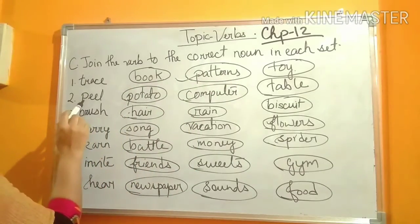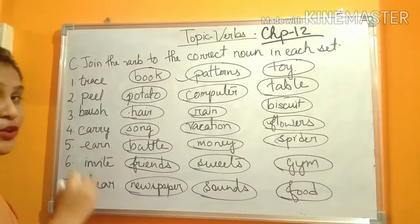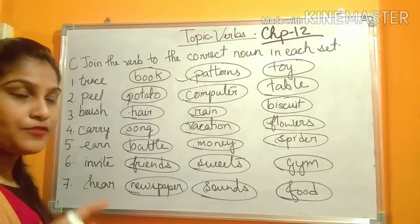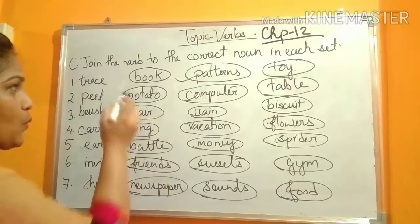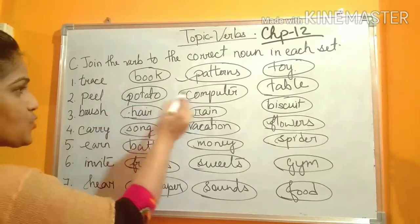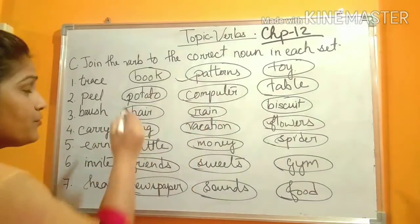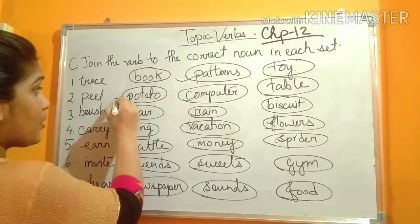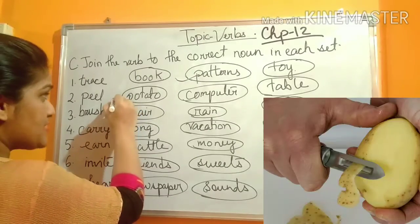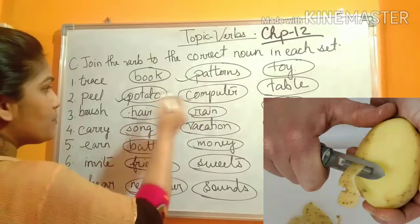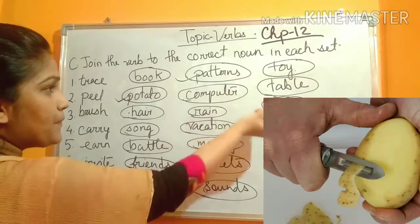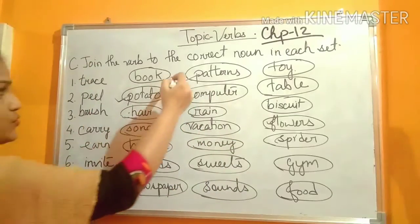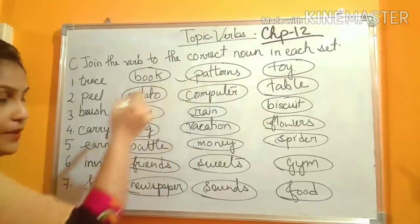Next, number two: Peel. Peel means when you remove the outer covering from a fruit or vegetable. The options are potato, computer, or table. Remove the outer covering from a vegetable — that is potato. You cannot remove it from a computer or table. So this one will be the correct answer.